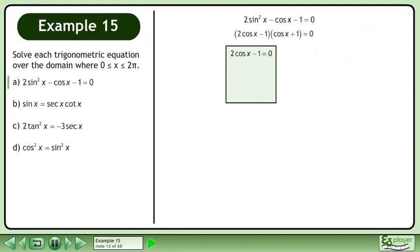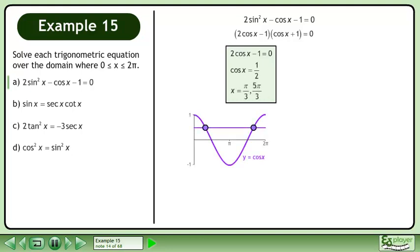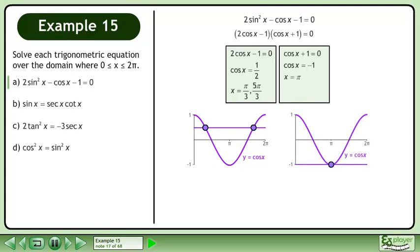Solve 2cosx minus 1 equals 0. Isolate cosx. The solution is x equals pi over 3 and 5pi over 3. Now solve cosx plus 1 equals 0. Isolate cosx. The solution is x equals pi.